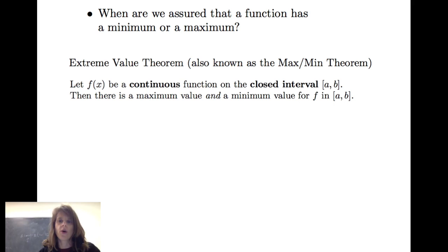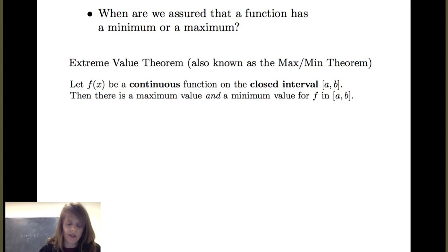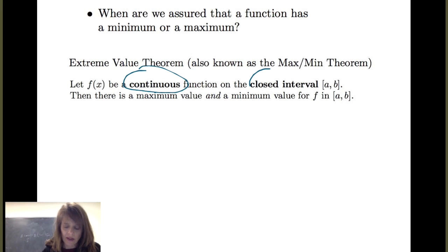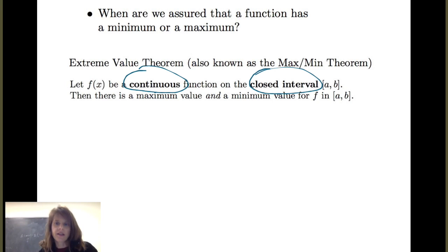It's called the extreme value theorem, also known as the max-min theorem. It says: let f of x be a continuous function on a closed interval from A to B. Then there is a maximum value and a minimum value for f on that closed interval. Notice we have two hypotheses to be guaranteed a maximum and minimum value — the function must be continuous and we must be on a closed interval.